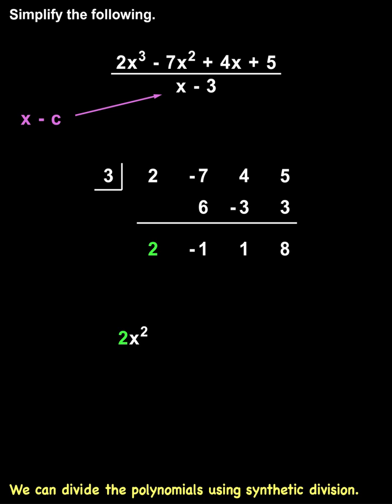So our answer is 2x squared minus 1x plus 1 plus 8 over x minus 3. Notice that we always use descending order of powers in our quotient. In this case, x squared, x, and the constant.